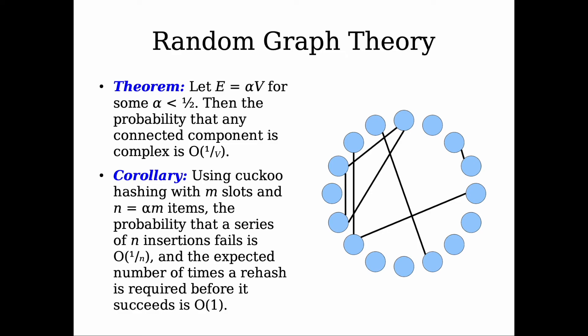Here, using this probability, we can compute the expected number of times a rehash is required before it succeeds, and the expected number as computed is in constant time. So that's the justification for why insertion runs in constant time in expectation. And the proof for this theorem sometimes involves enumeration of the different connected components, which is messy according to the paper. But it's an open problem if there is an alternative proof that is simpler than that.